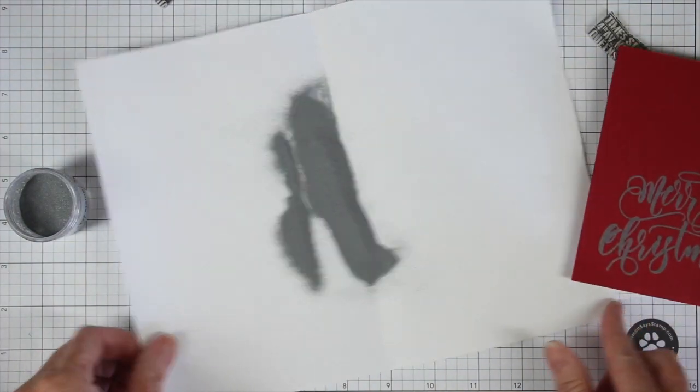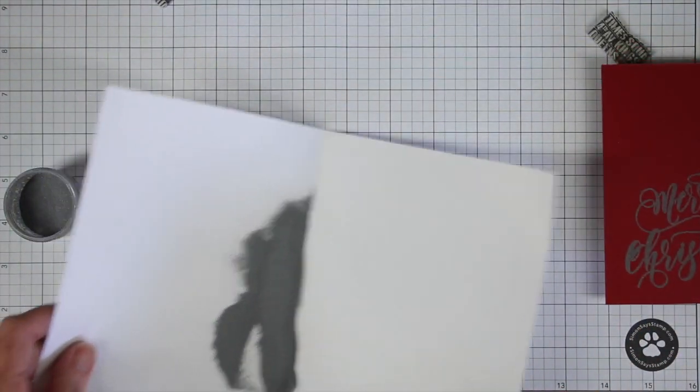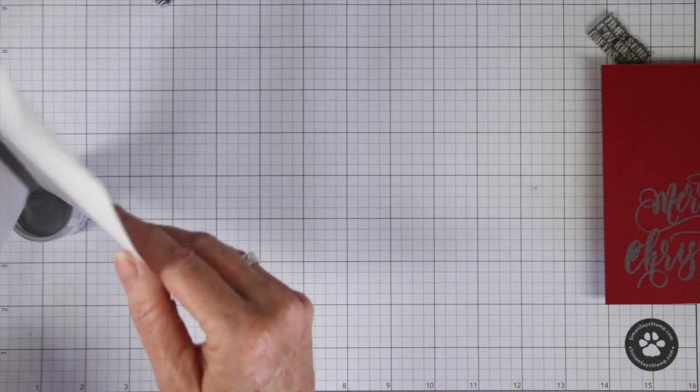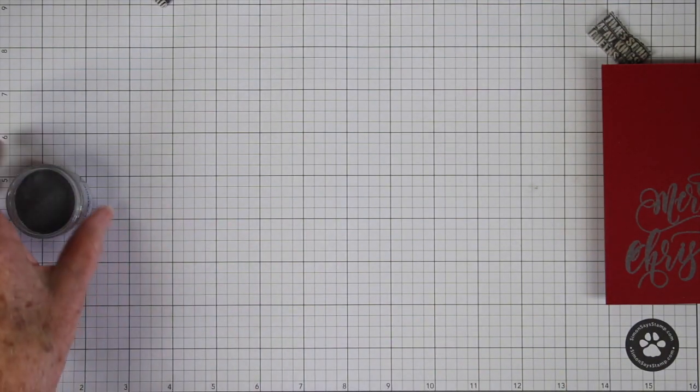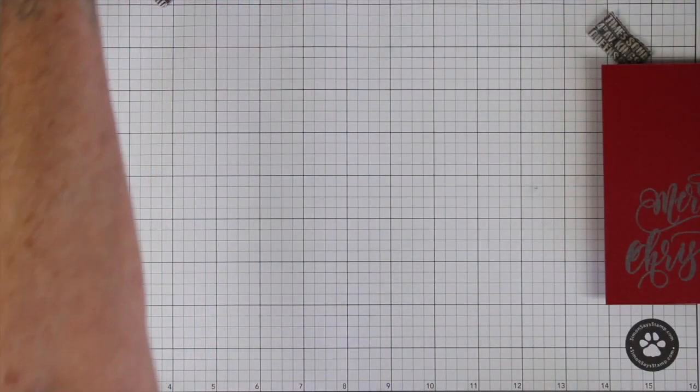If I do, I can remove it with a little paintbrush or a poke tool. To put my embossing powder back in the jar, I just fold that paper up and pour that right back in.